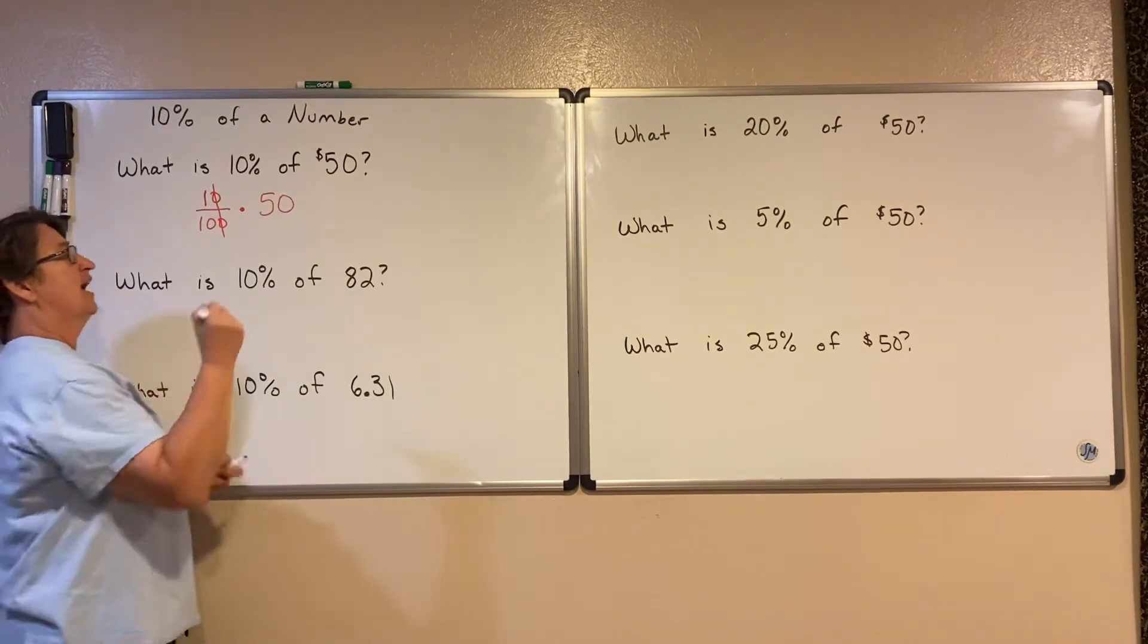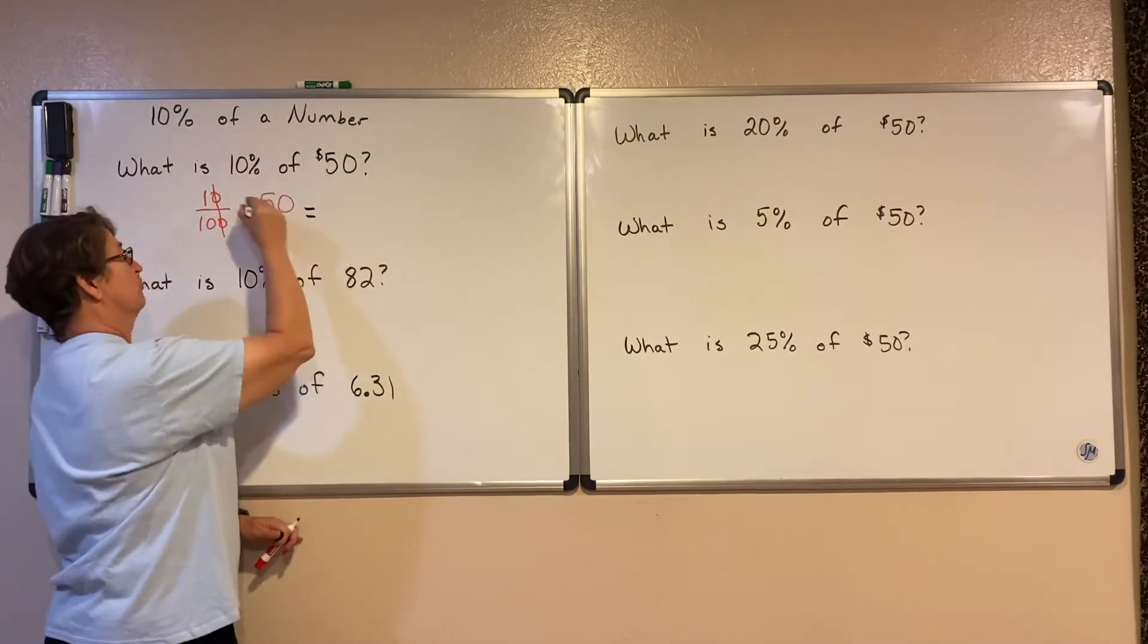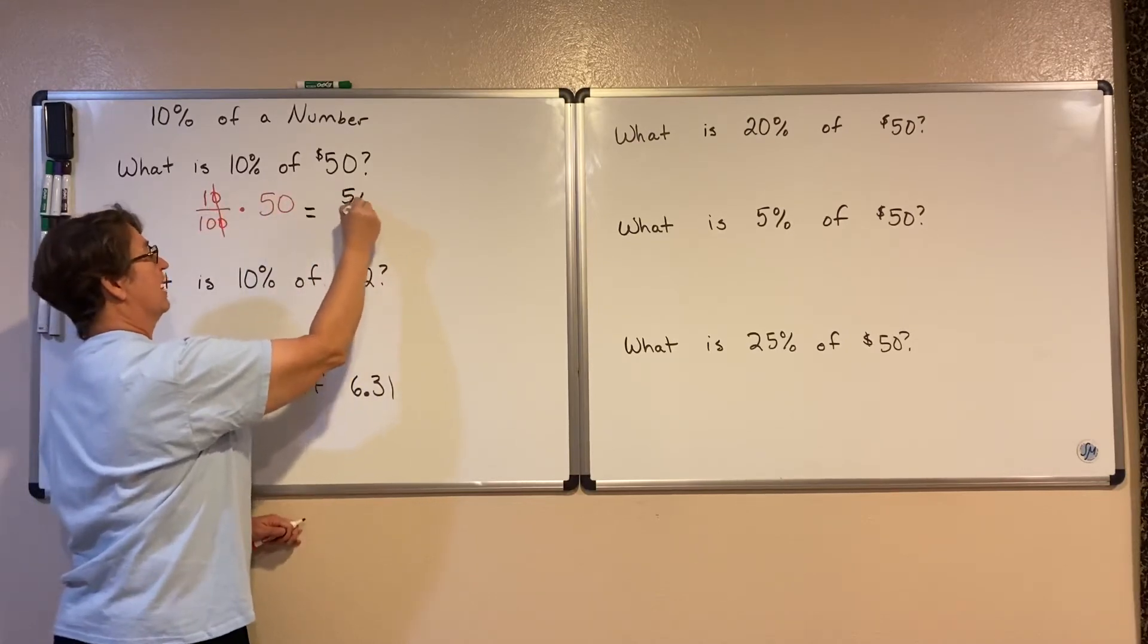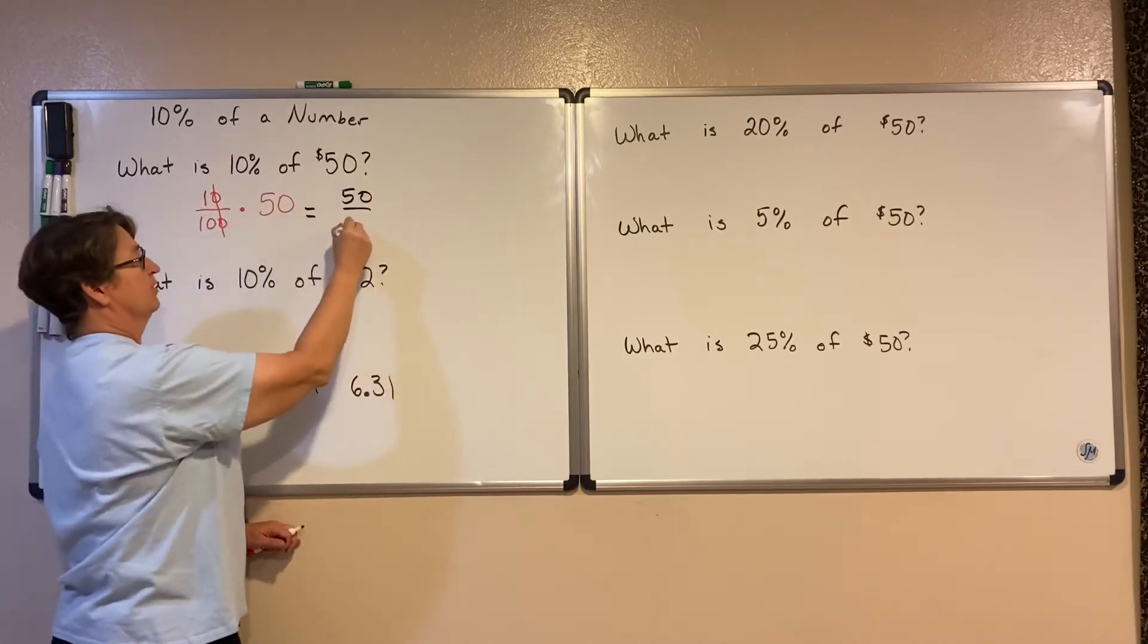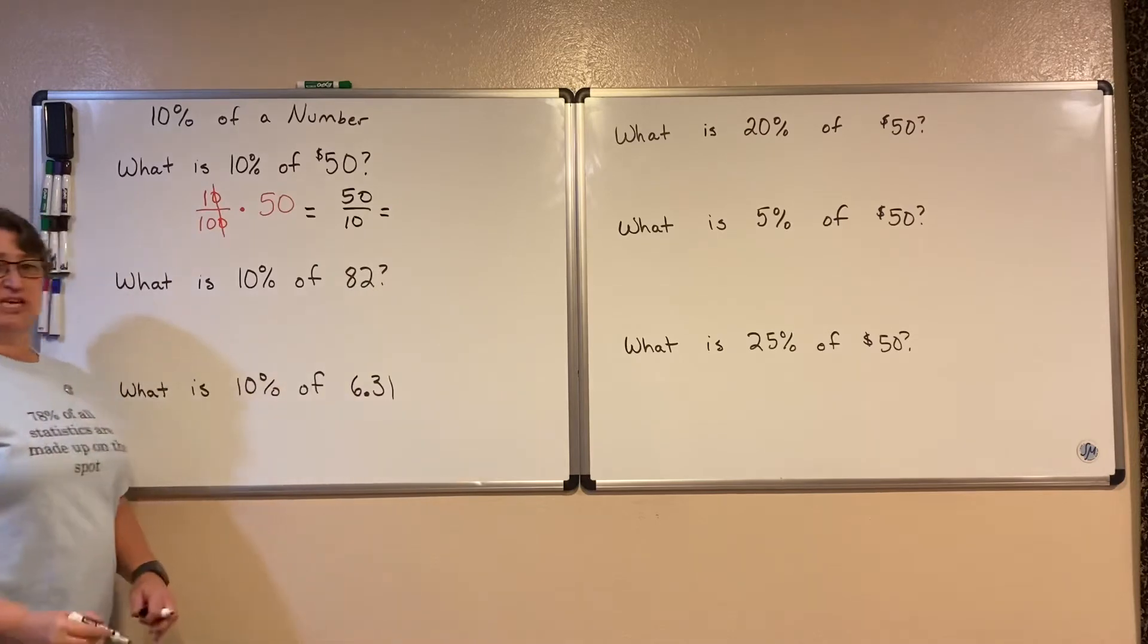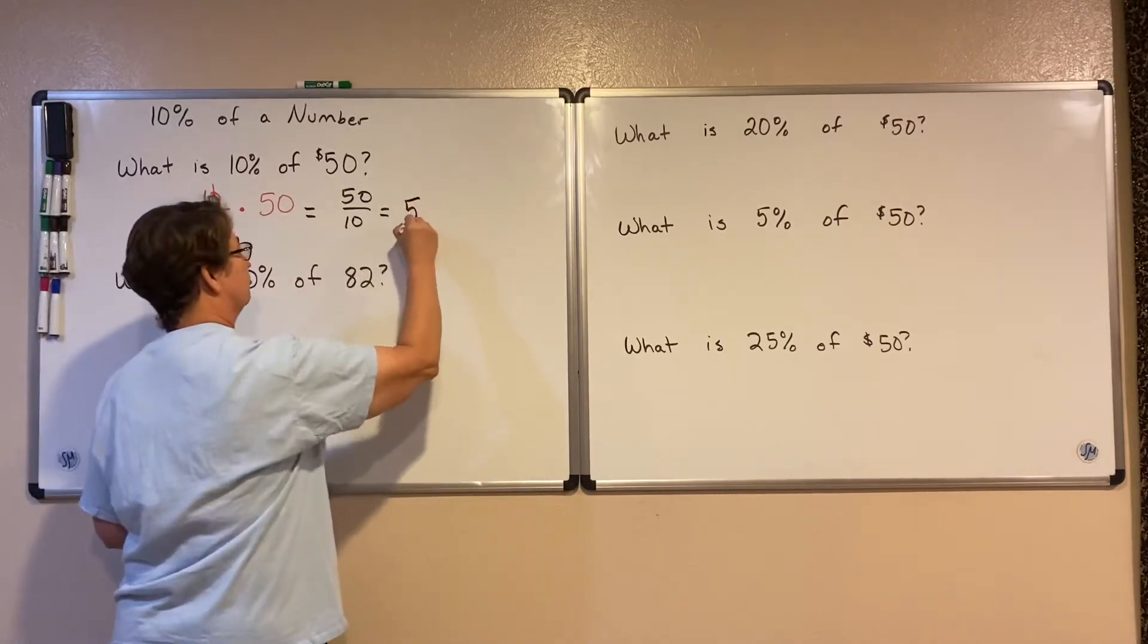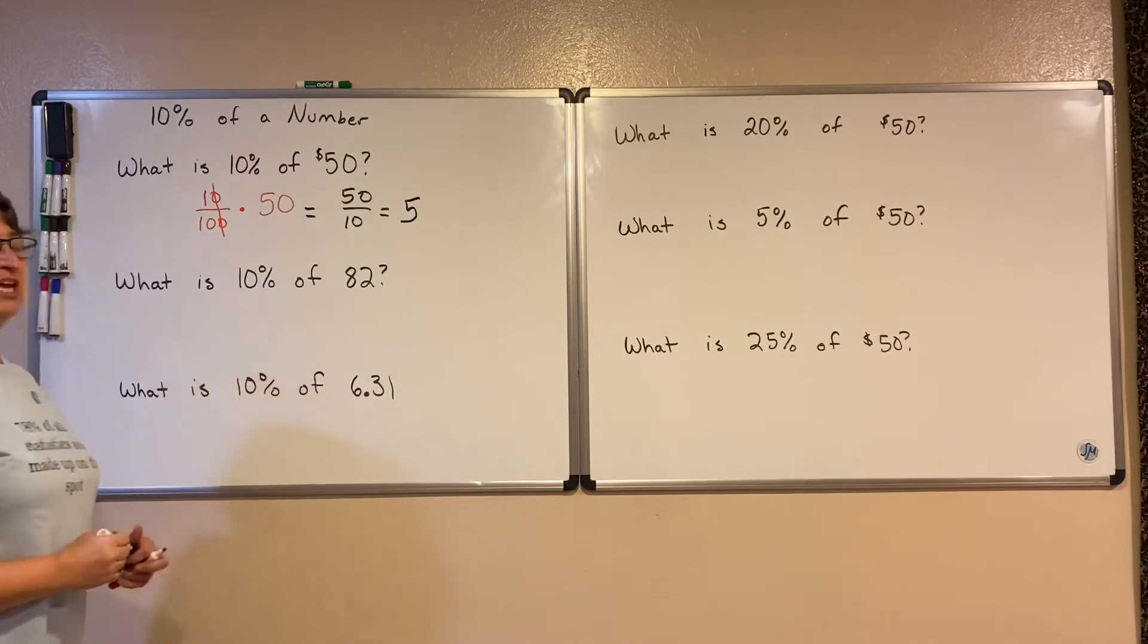So multiply that. And remember when you multiply fractions, you just multiply the top times the top and the bottom times the bottom. So you end up with 50 over 10, which is just equal to 5. So 10% of 50 is just equal to $5 there.